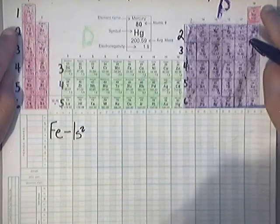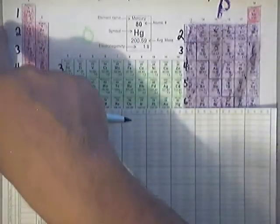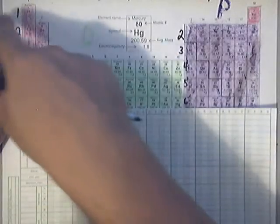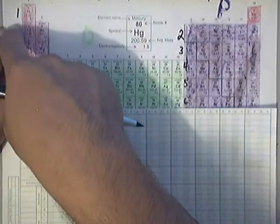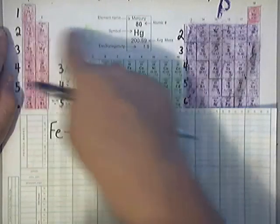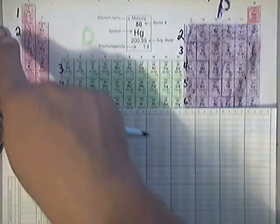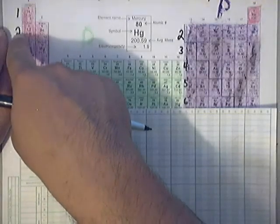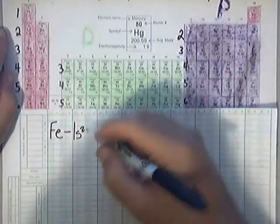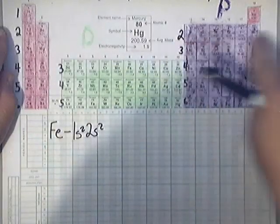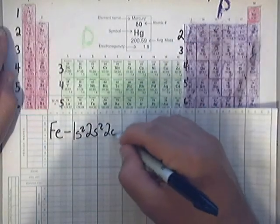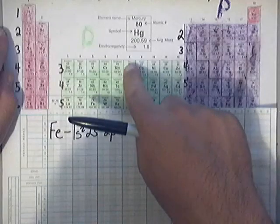Now once I write that one down, I'm out of the 1s2 area and I'm entering into a new row. I get ready to try to go across the period, and when I do that I end up going through two colors. So I have to make two more writings. I have to record that I pass out of 2s2, I pass out of the 2p6 as well, because I got to keep going.